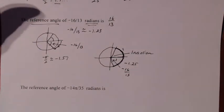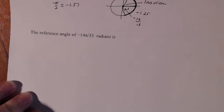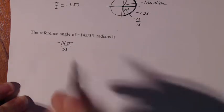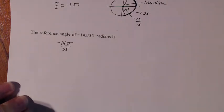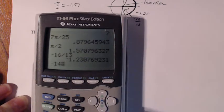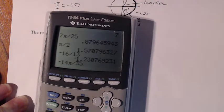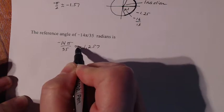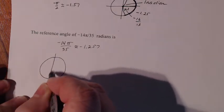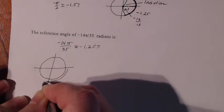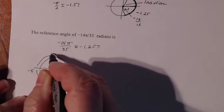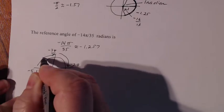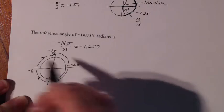Last question: the reference angle of negative 14π over 35. Let's go through the same steps. Since it's negative, we go clockwise around the circle. Approximating: negative 14π divided by 35 gives me approximately negative 1.257. On the unit circle going clockwise, the boundaries are negative π over 2, negative π, negative 3π over 2, and negative 2π.